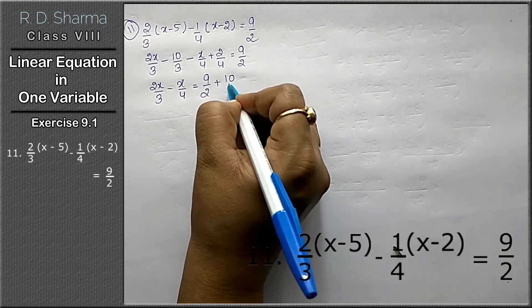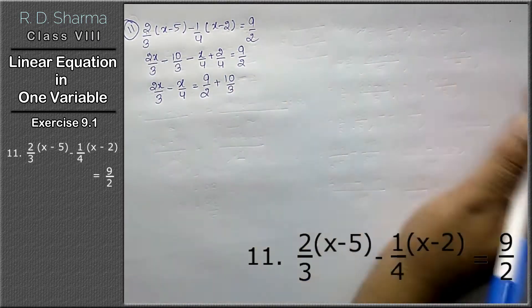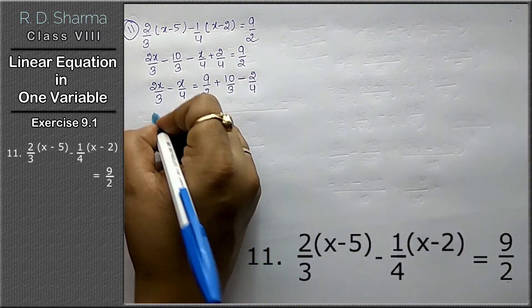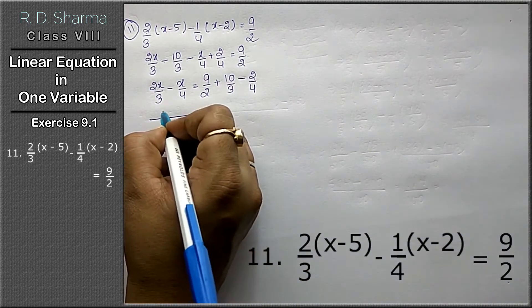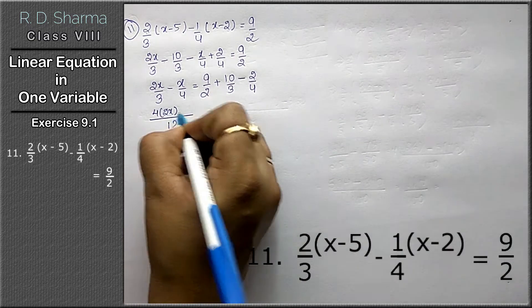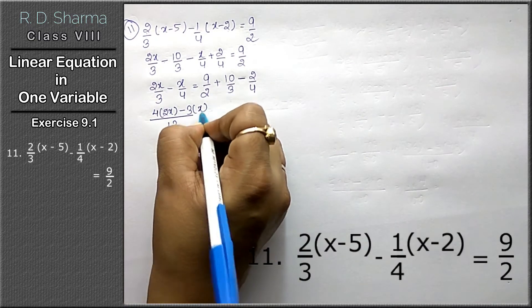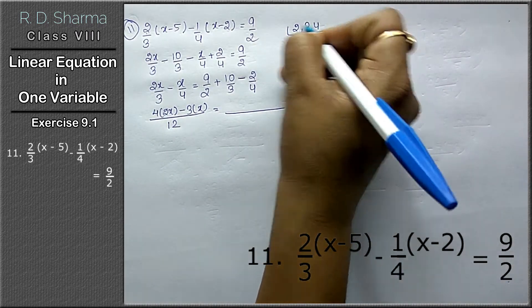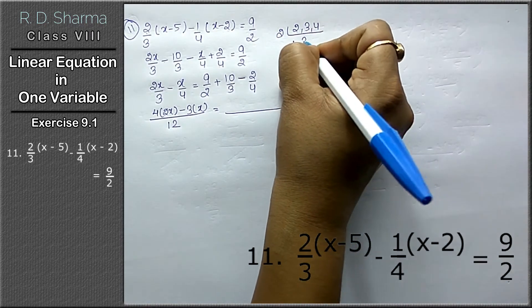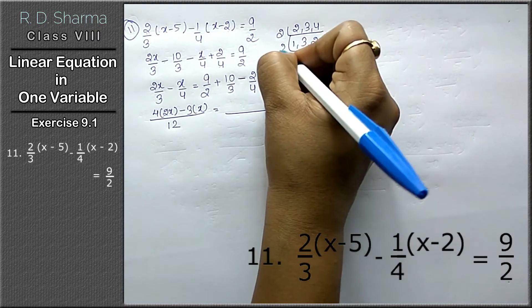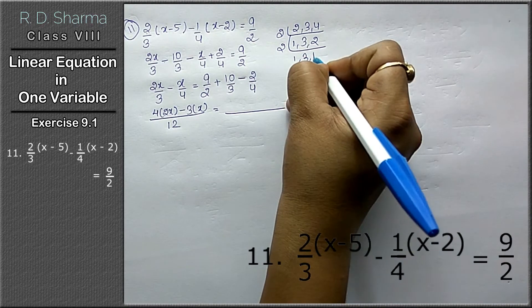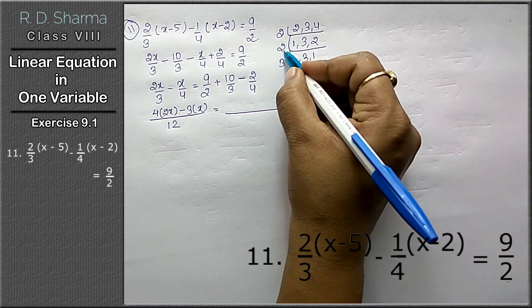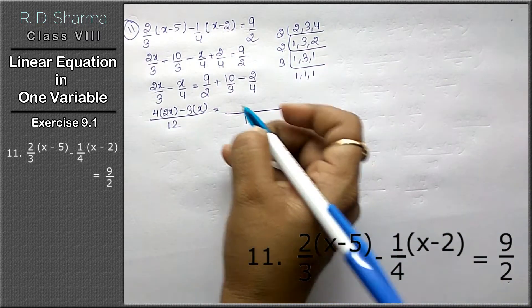Now we will take the LCM. To find the LCM of 3 and 4: 2 times 2 is 4, then 3, giving us 12. 12 is the LCM.